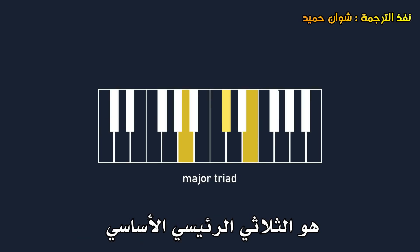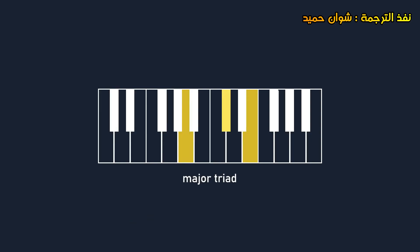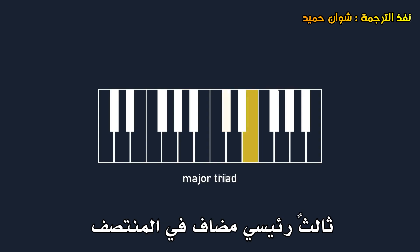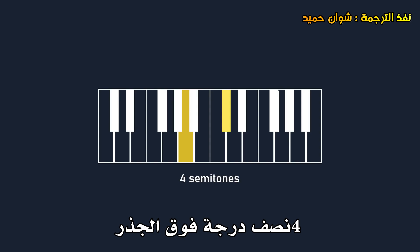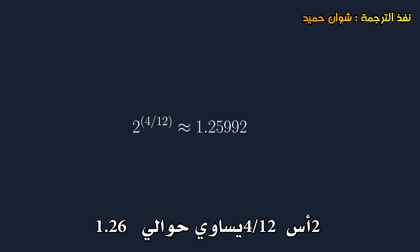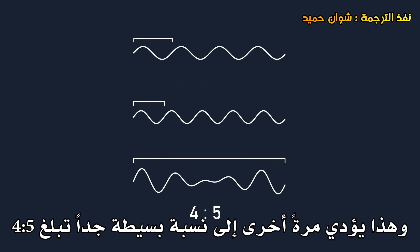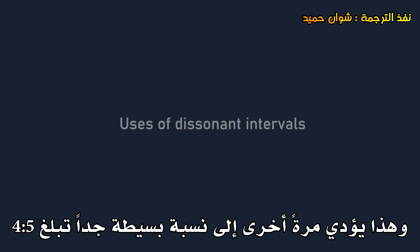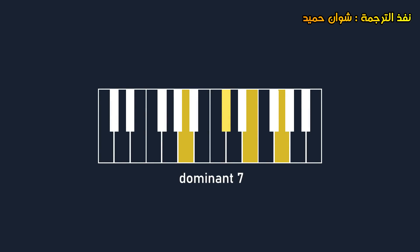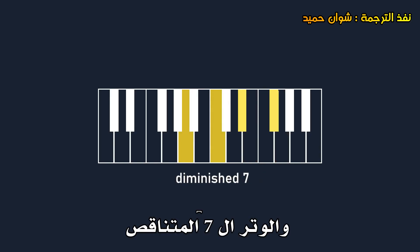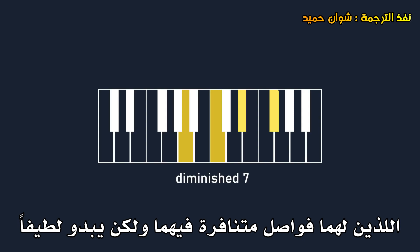A chord consists of 3 or more notes. The most consonant chord is arguably the basic major triad, which is just a root, a perfect fifth, and a major third added in the middle — 4 semitones above the root. 2 to the power of 4 over 12 is about 1.26, which is close to 1 and a quarter, resulting in quite a simple ratio of 4 to 5. However, to see that dissonant intervals also have their roles, we can look at jazz chords such as the dominant 7th chord and diminished 7th chord, which both have dissonant intervals in them, but sound nice.